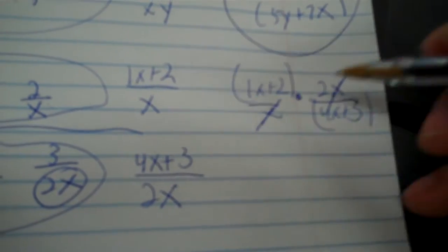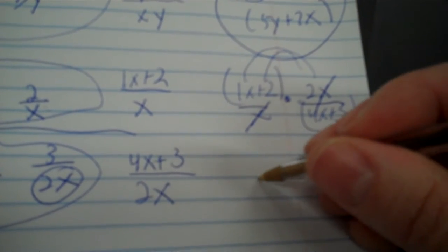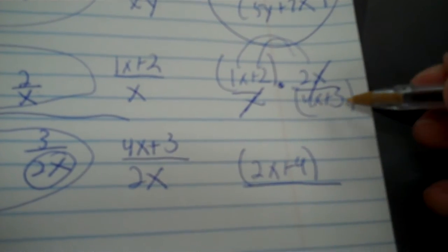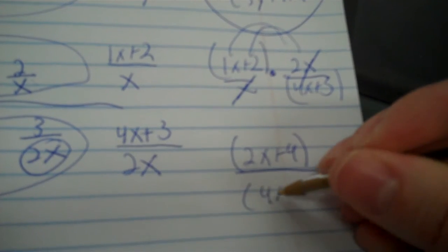Okay, your parentheses cannot be canceled. But your outside x's can be. Now, you have to take one x plus two times two. So, all you do there is distribute your two to both of those. So, it's going to be two x plus four. And then four x plus three on the bottom.